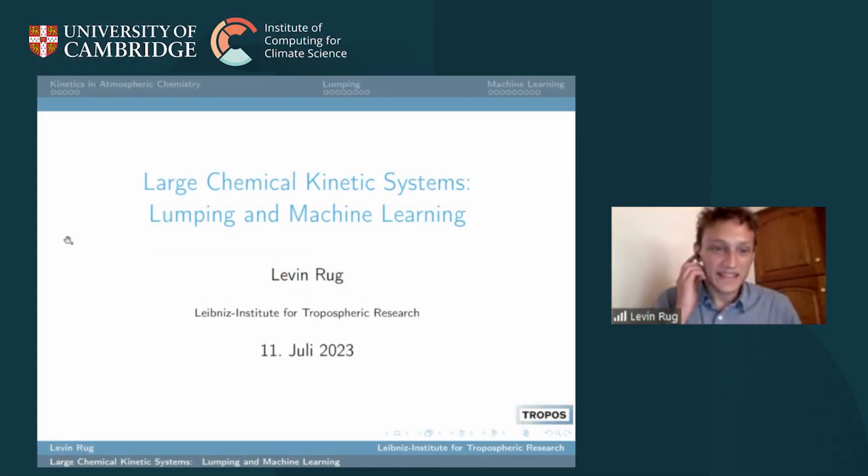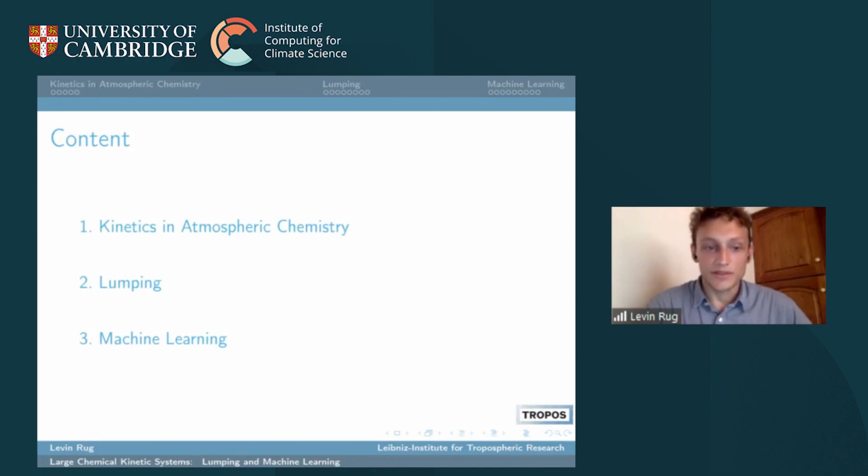Hi everyone. I'm a master's student of mathematics and I work as a research assistant at the Leibniz Institute for Tropical Research where we try to reduce large chemical kinetic systems. I'll give a short outline of kinetics and chemistry and then present two methods we developed which are ready to use now, but they have benefits and disadvantages.